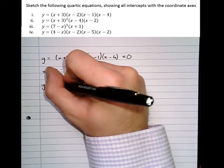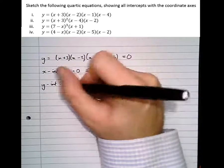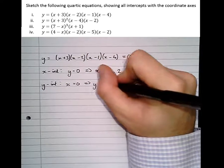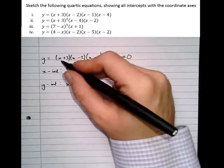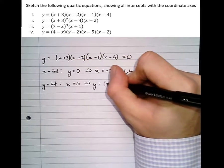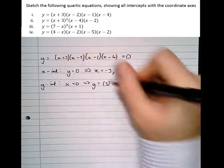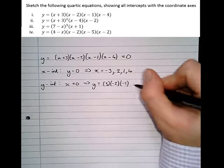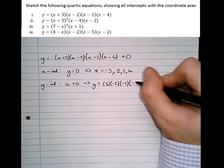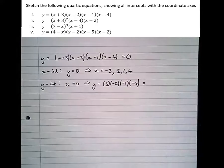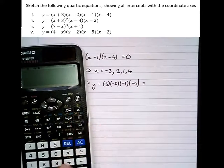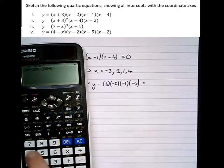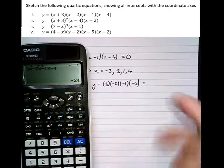Next step, find the y-intercepts. The y-intercepts happen when x equals 0, which means that y equals (0 + 3)(0 - 2)(0 - 1)(0 - 4). Let's pop that in the calculator: 3 times minus 2 times minus 1 times minus 4 equals minus 24.